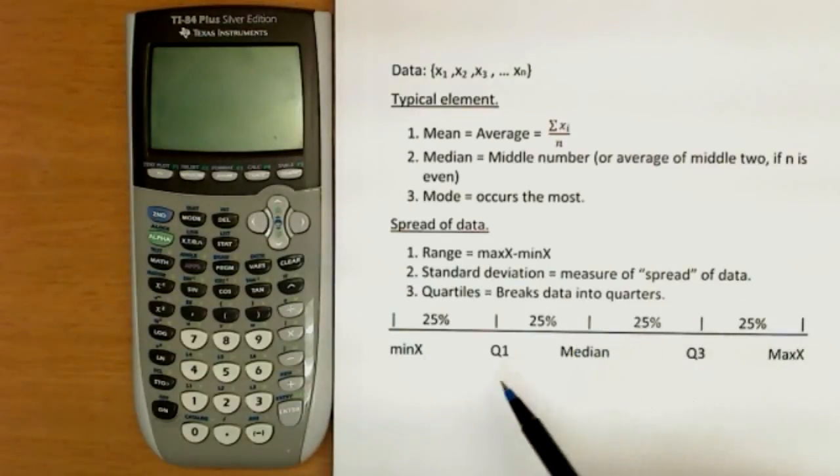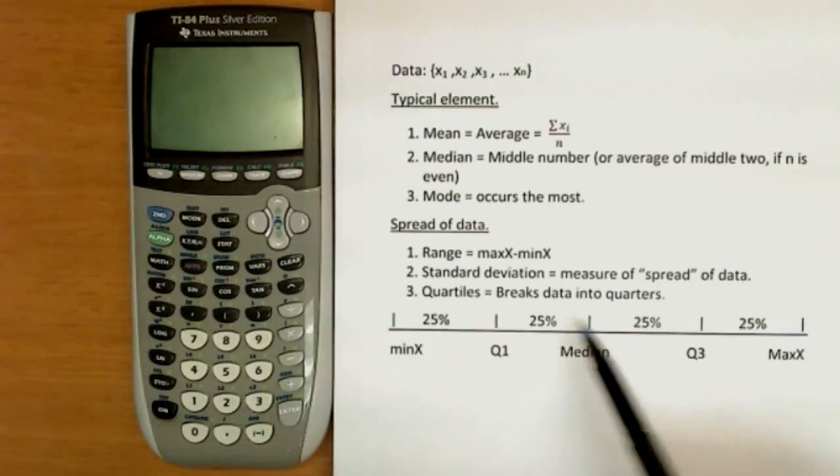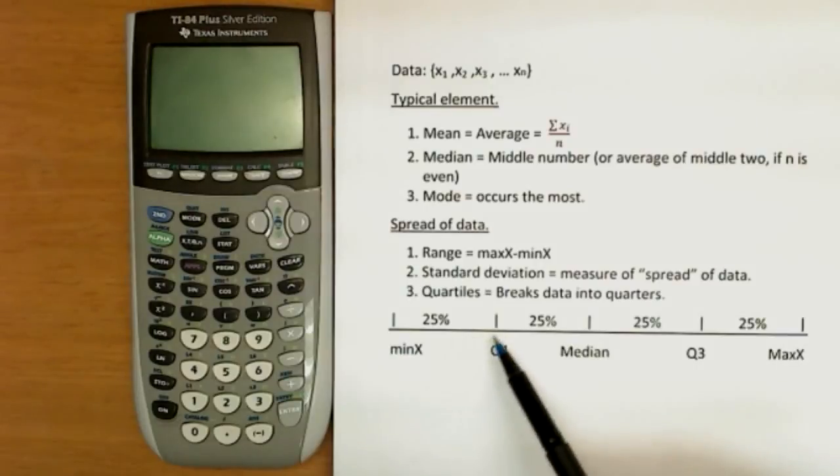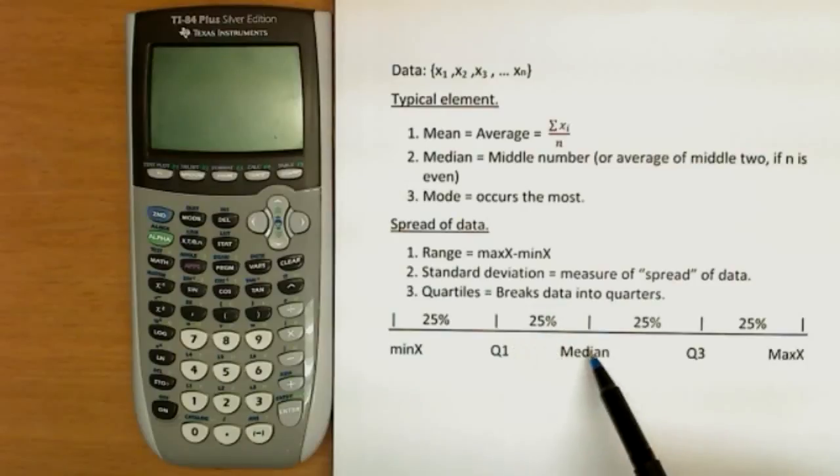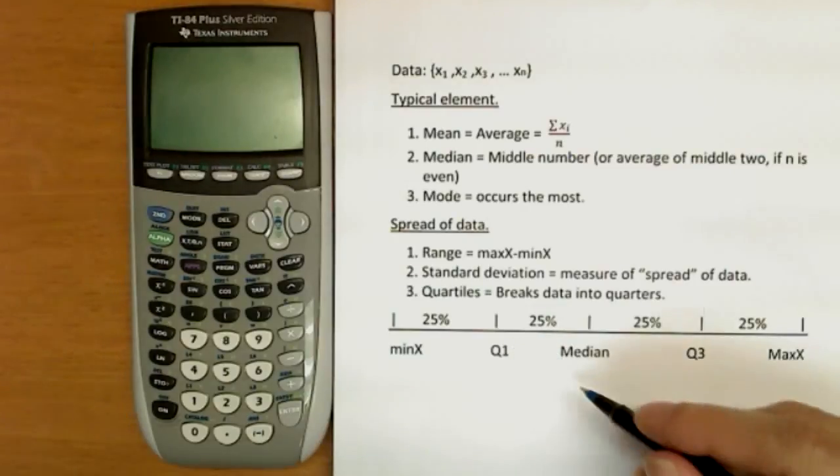So what the quartiles are is we've kind of simply done a median of the bottom half. So we've broken the half into halves again. Of course, that makes it quarters. So 25% are before quarter one, 25% between quarter one and the median, and so on here. And median can actually be considered as quartile two.